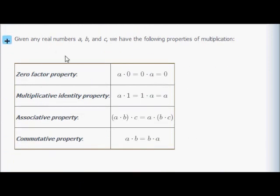Now let's look at some properties. The zero factor property: zero times any real number is zero, and you can change the order — a times zero equals zero times a equals zero. The multiplicative identity property: a times 1 equals 1 times a equals a — anything times one is that thing itself.